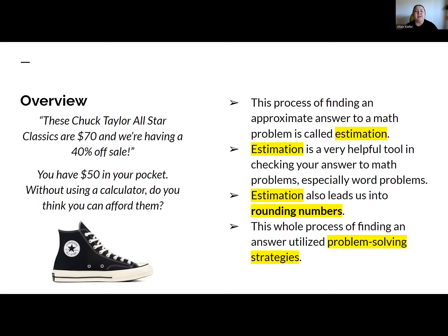So for the Chuck Taylor All-Stars at $70 with a 40% off sale, you'd want to find what 40% of $70 is. You estimate that's probably about $30 off, making them about $40. You have $50 in your pocket, so you can probably afford them. That's the kind of mental math we're going to use here, without a calculator.